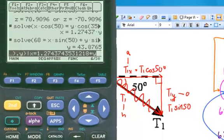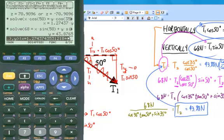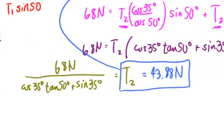And when I do, it tells me that Y is equal to 43.8765. That's essentially 43.88 Newtons. That's what we got.